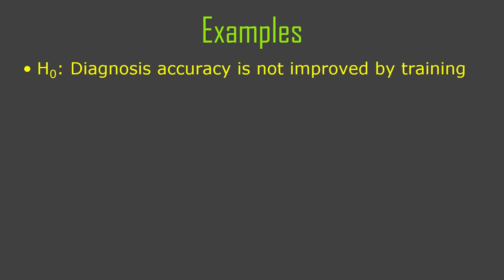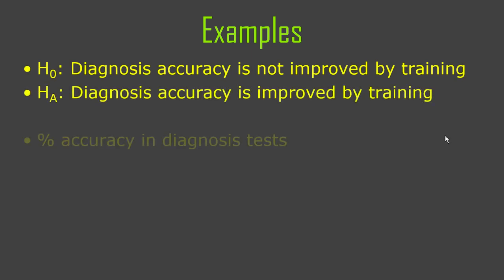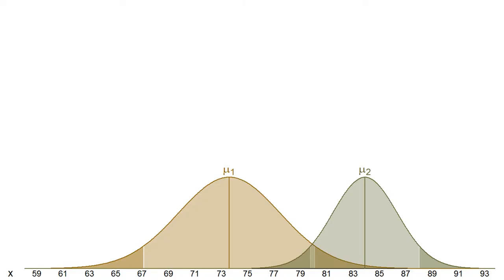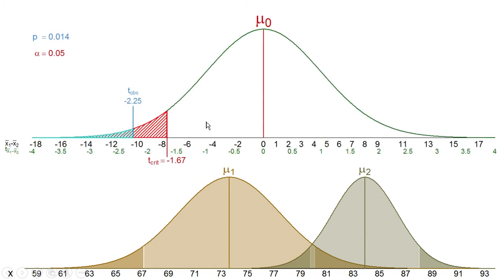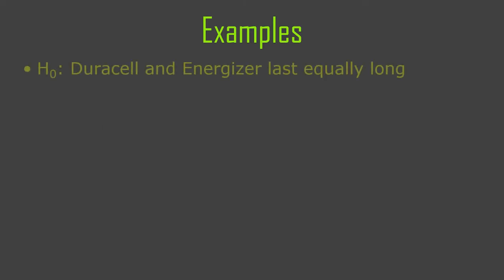Is diagnostic accuracy improved by training? The null says it is not. The dependent variable is percentage accuracy in diagnostic tests. Mu1 is accuracy before training, mu2 is accuracy after. We think mu1 should be lower than mu2, so one minus two should be a negative number. T-critical is negative 1.67, found using the right degrees of freedom in a t-table. Our t-observed, found using the formula, is negative 2.25 — it's in the rejection region. Therefore we reject the null hypothesis and say diagnostic accuracy was improved.